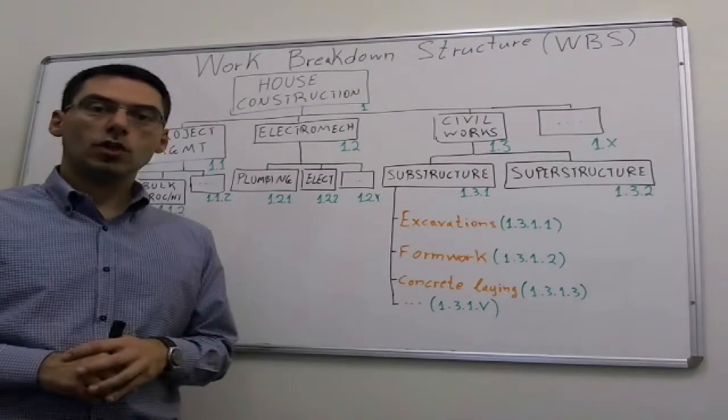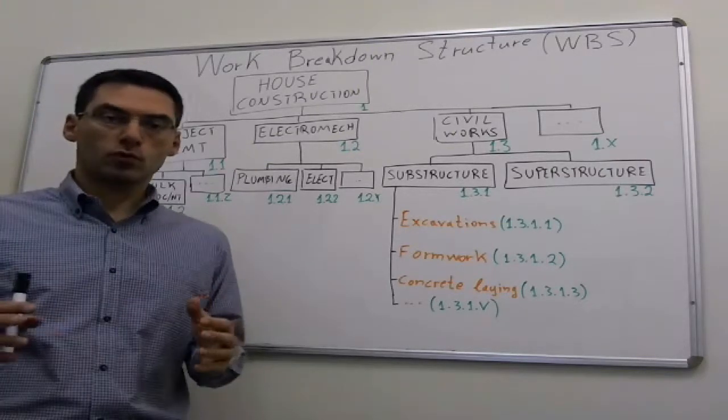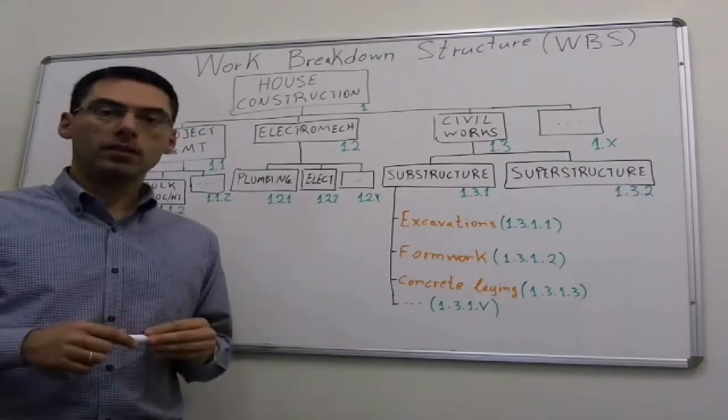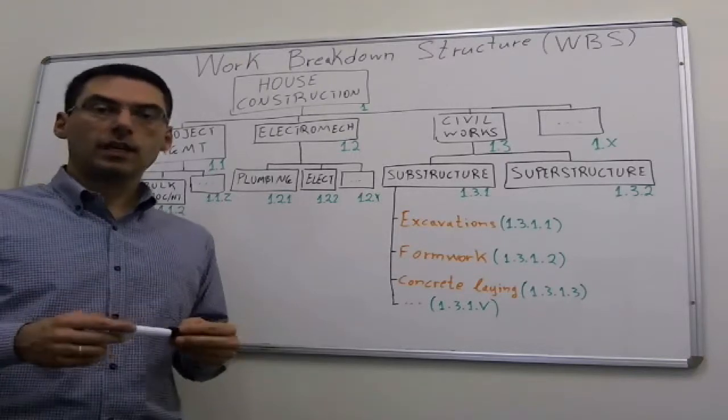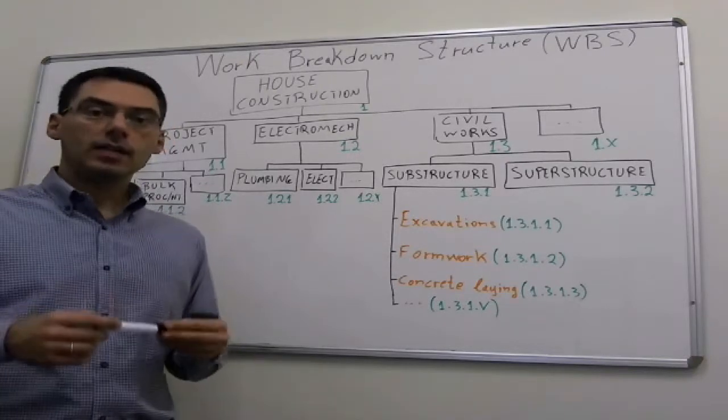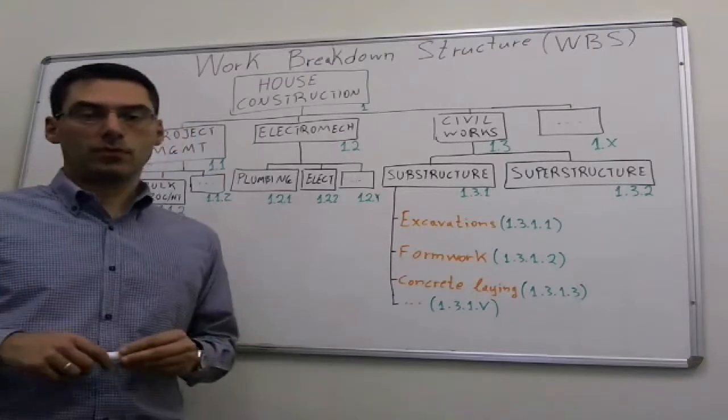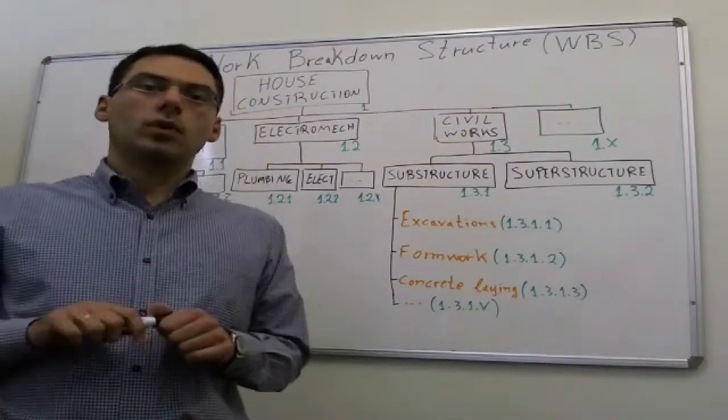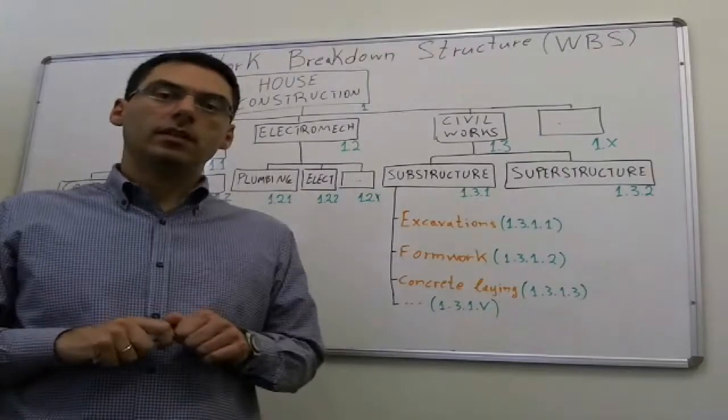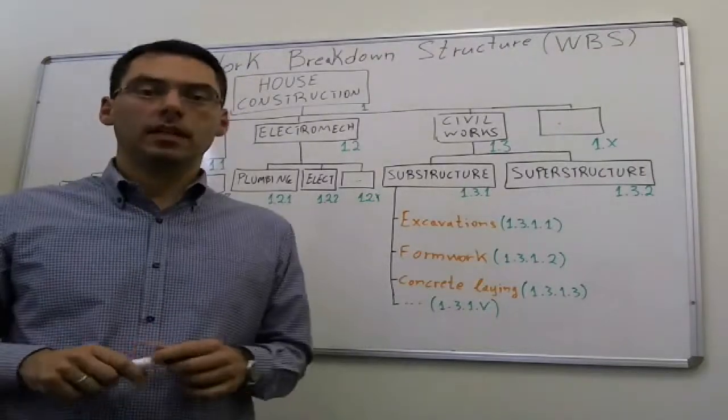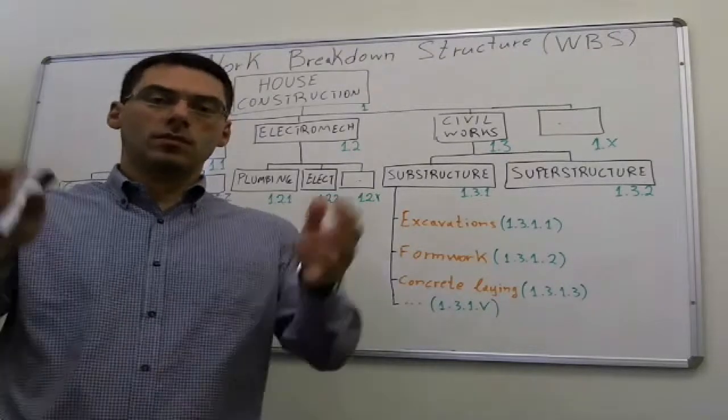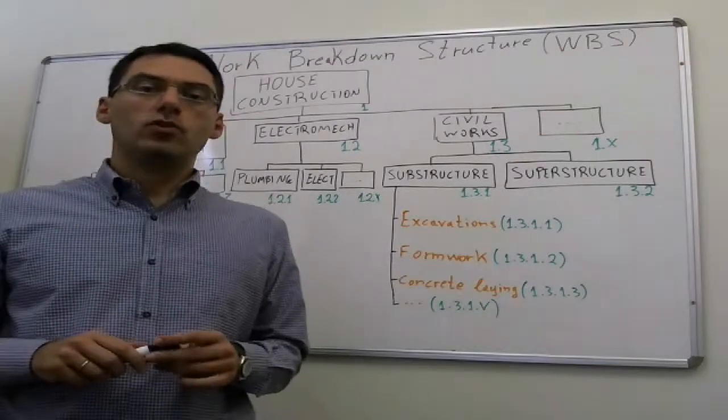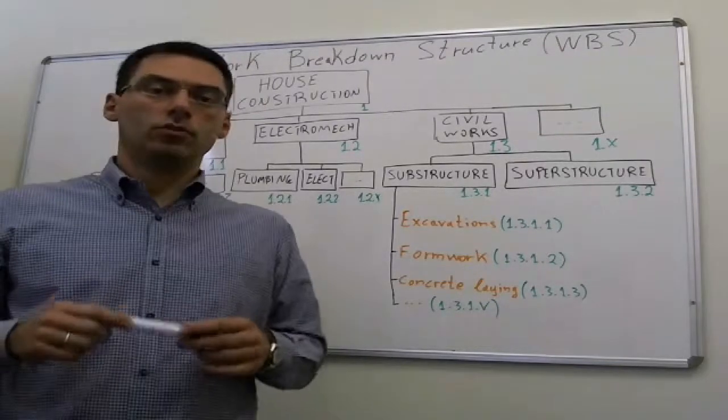The first one is that each low level activity should be autonomous. Autonomous means that as soon as all the predecessors have been completed, and the activity is able to start, it has the opportunity to finish without interruption. I am going to give you an example. Say that we are talking about implementing the electrical network in the house. If you put just implement electricals in the house, let's say about wiring, you will soon realize that this is not an autonomous task.